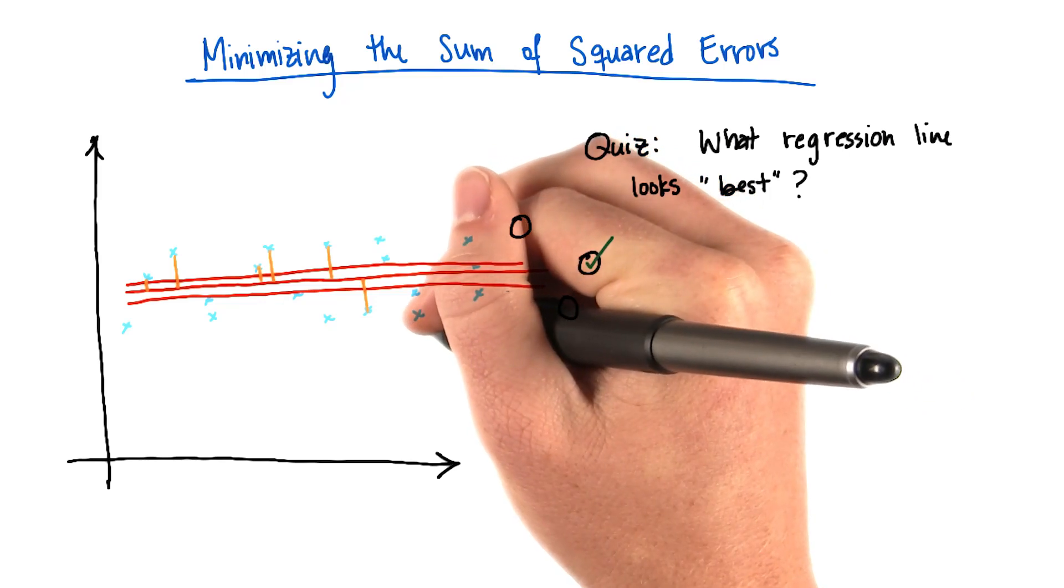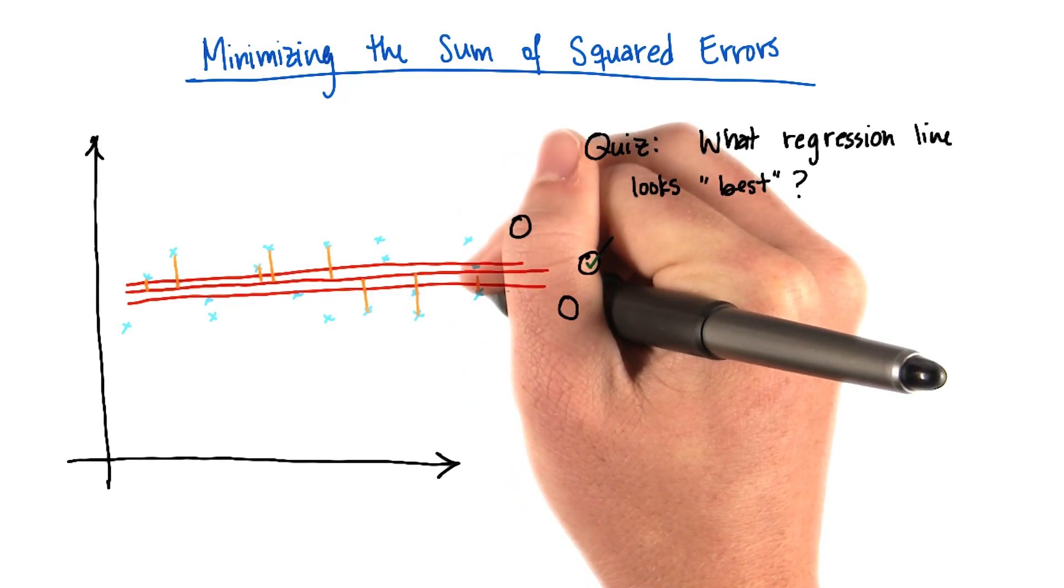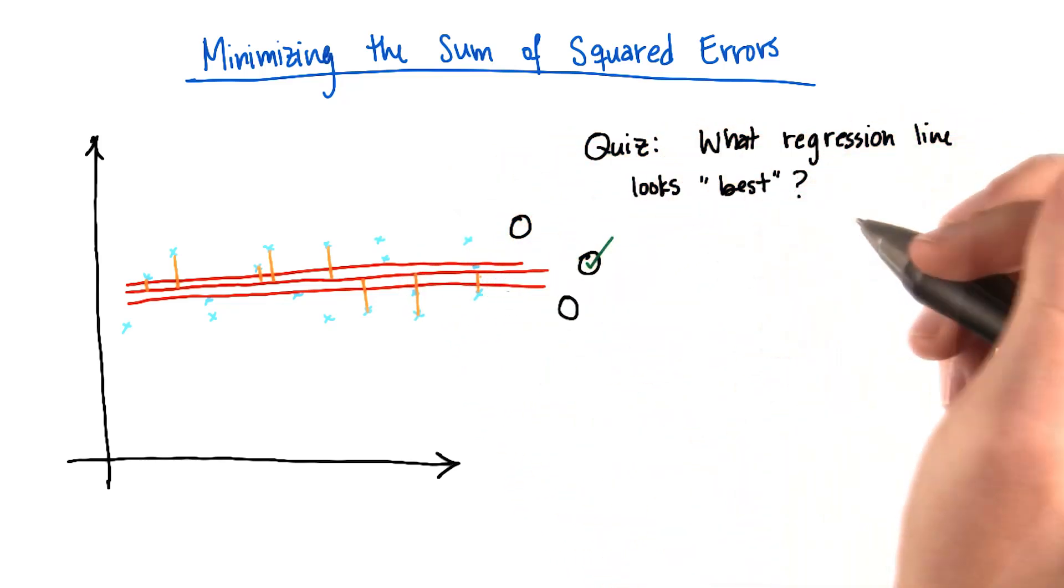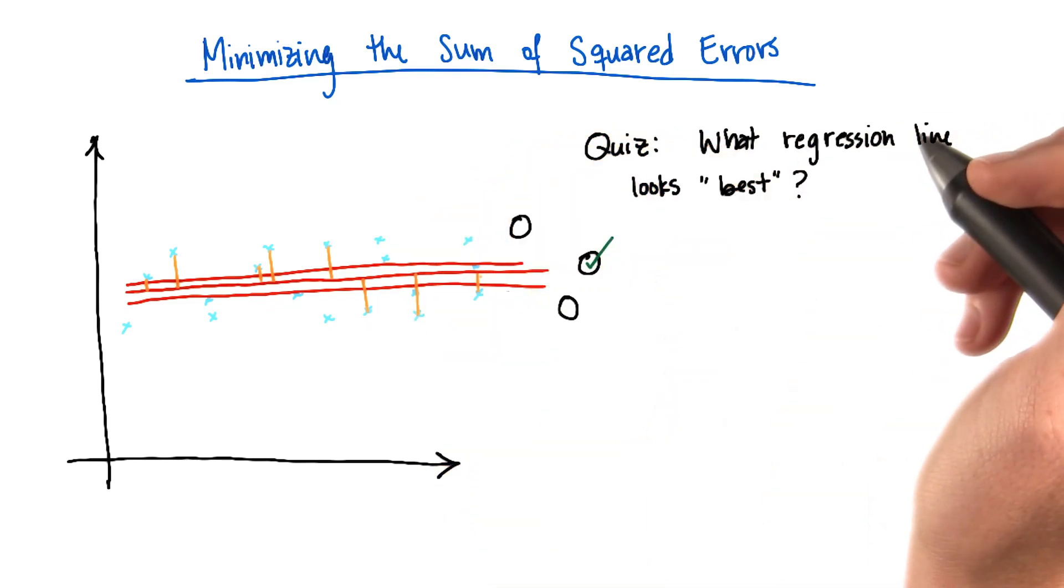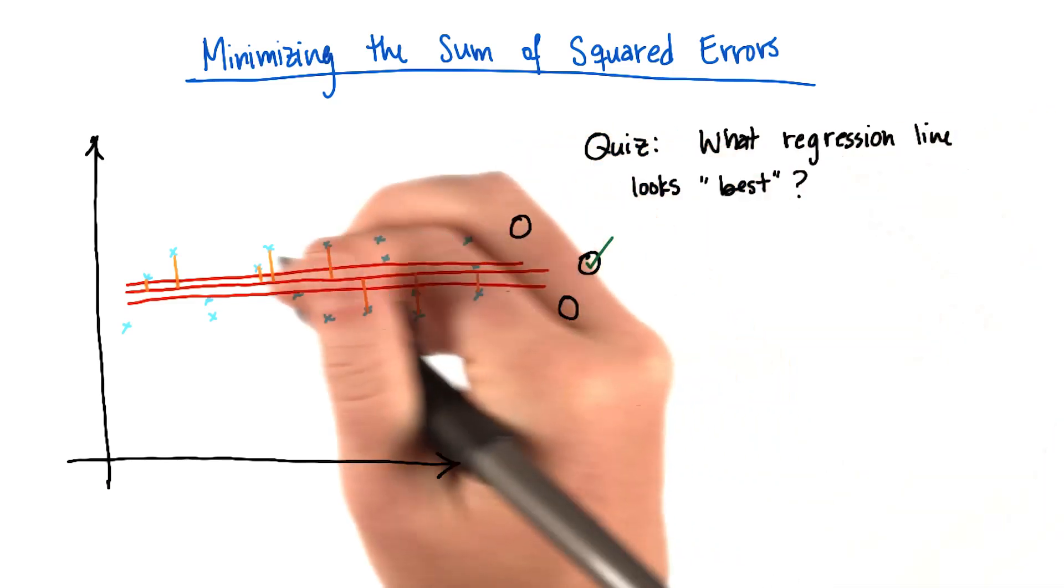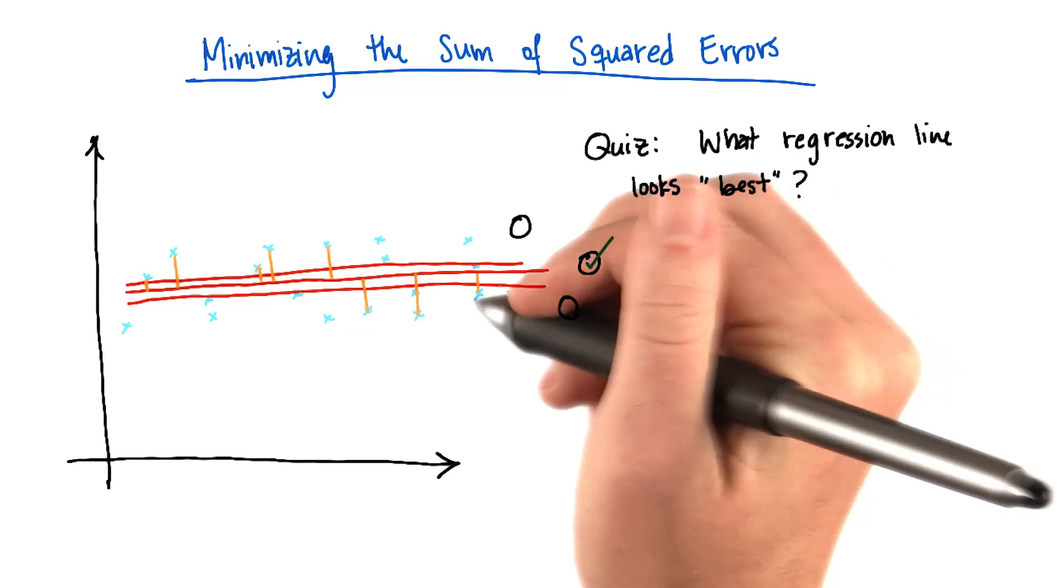It's just the distance from each point to the predicted value for that point on the regression line. And if you were just summing the absolute value of the errors, you would just sum up all of these orange distances and you would have your answer.